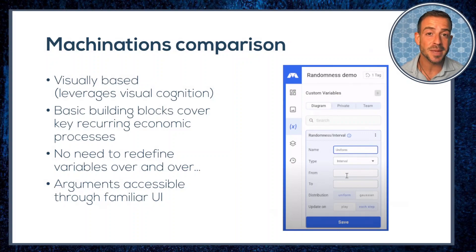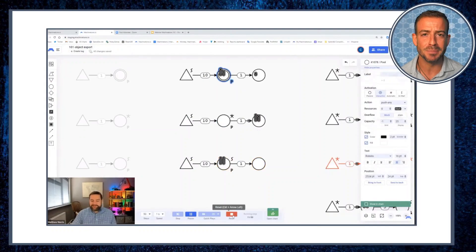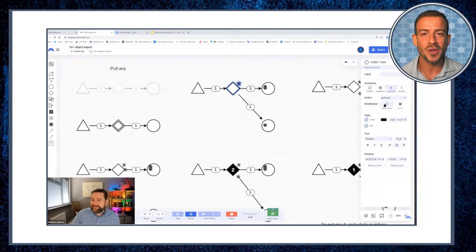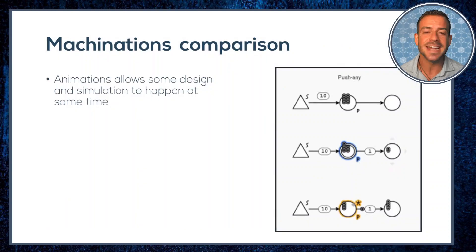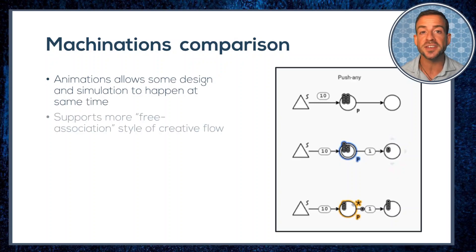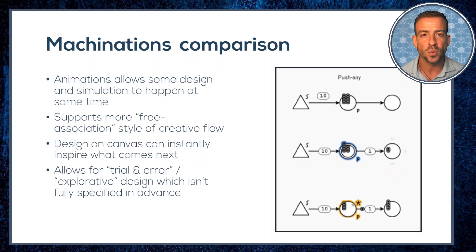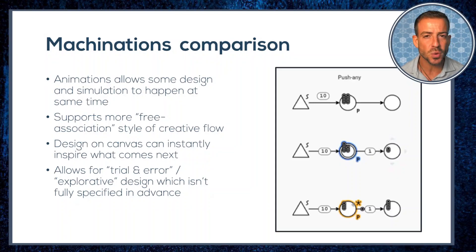Last but not least is the animation feature, which really bolsters the visual support and feedback you get from this tool. Design and simulation in Machinations can happen at the same time to a very considerable extent — something we don't get in Python. It supports a much more free-association style of creative flow, where the behavior of existing elements on your page inspires the next. It's also much more forgiving of trial and error and explorative model development, meaning we can get going much quicker with our building in Machinations.